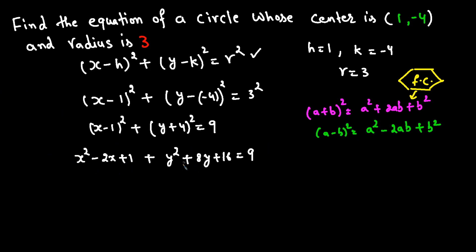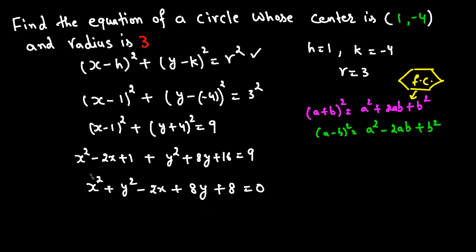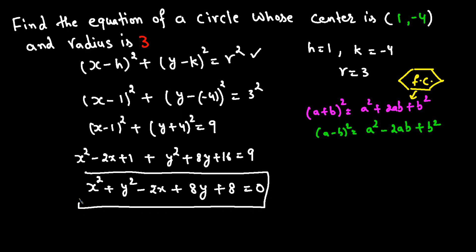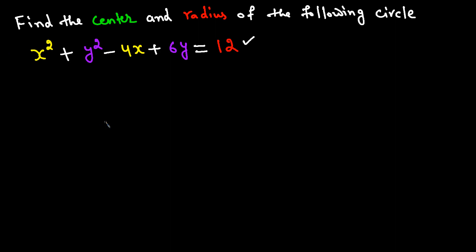Expanding everything and combining: X squared minus 2X plus 1 plus Y squared plus 8Y plus 16 equals 9. Combining all terms gives us X squared plus Y squared minus 2X plus 8Y plus 8 equals 0. That is the equation of the circle for this given center and radius.